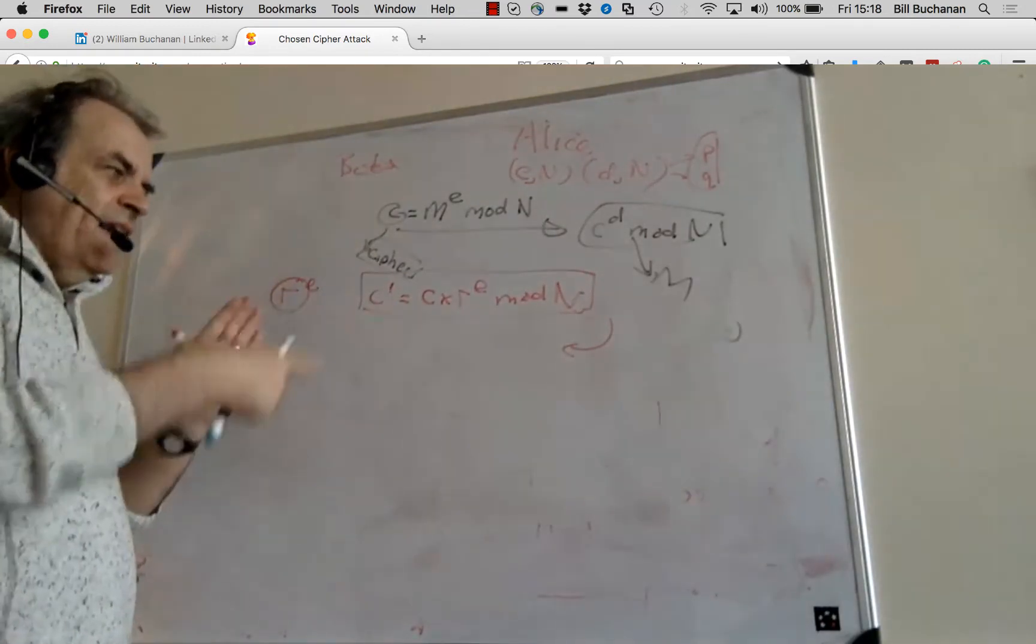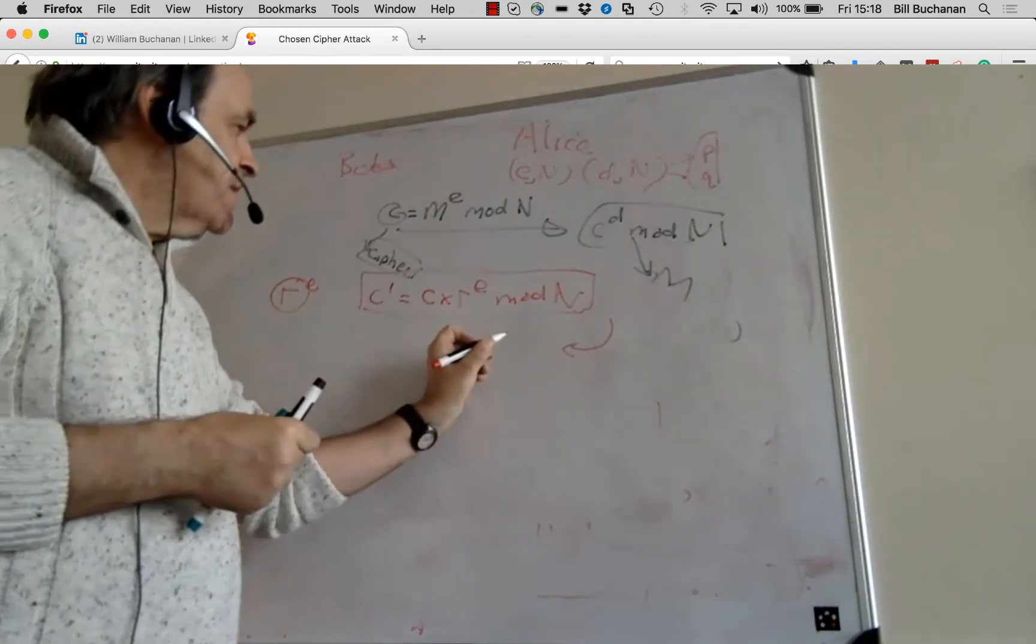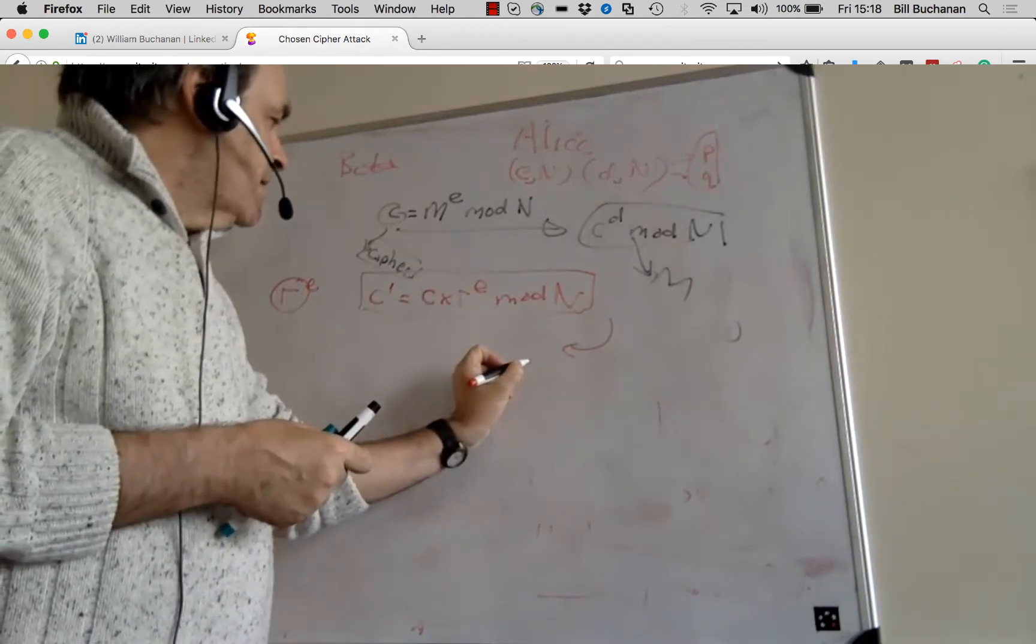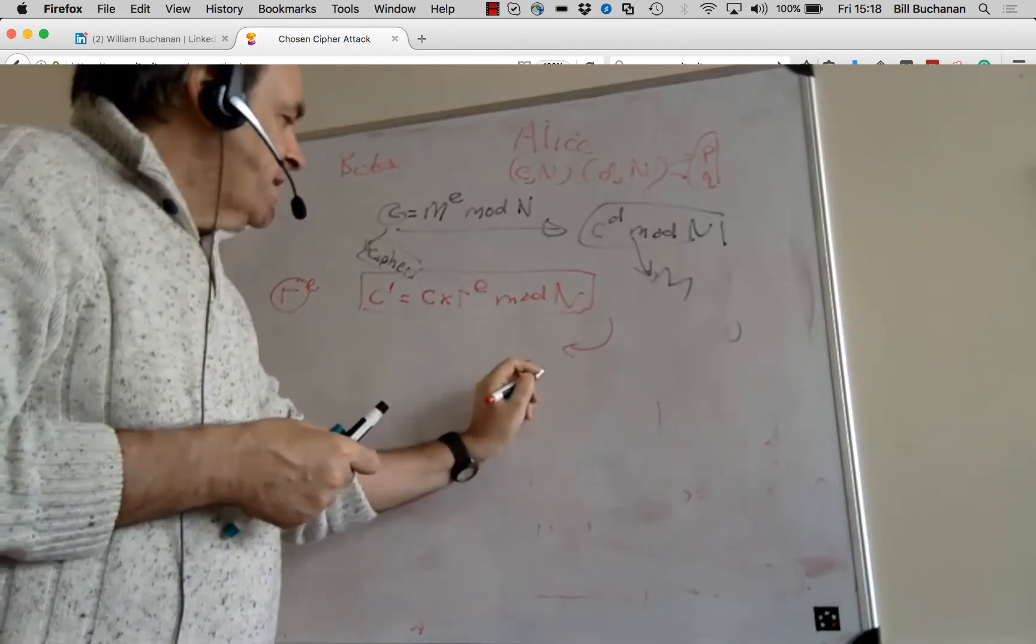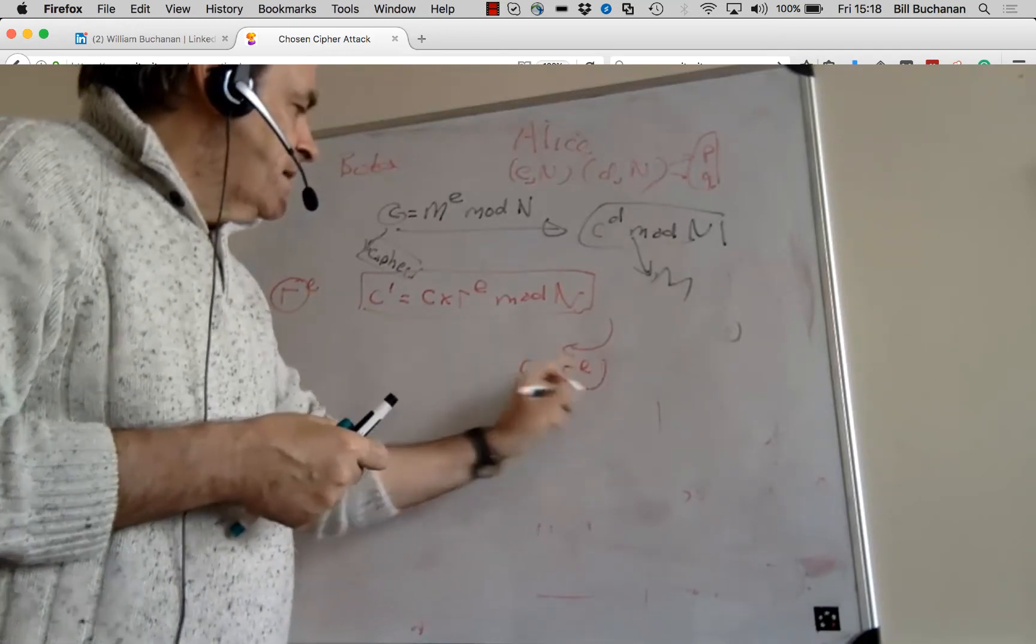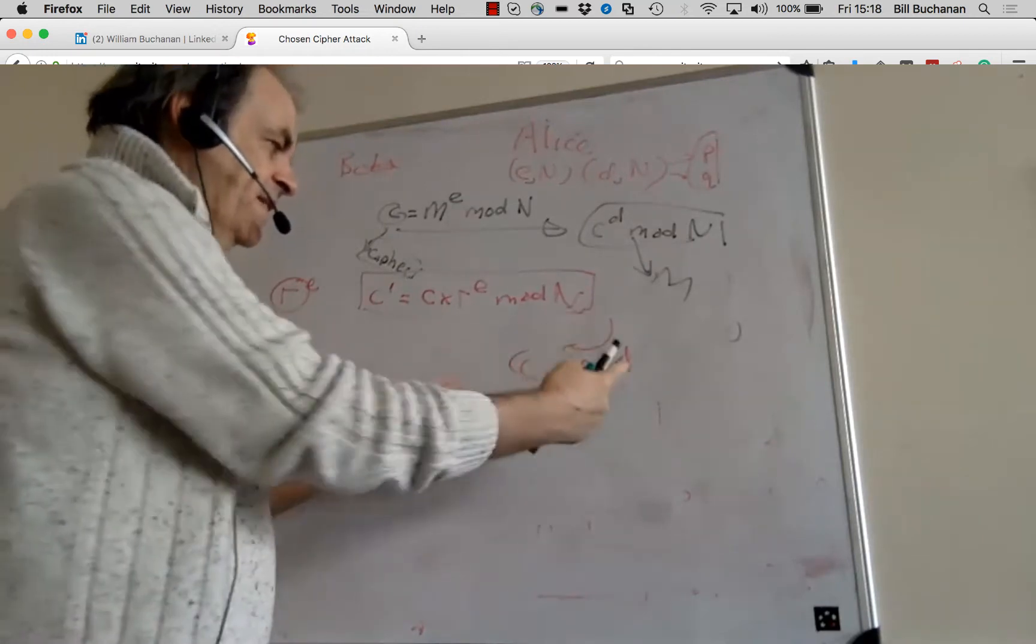So she will decrypt this. When she decrypts, she sends back, Bob, I can't understand this message here.